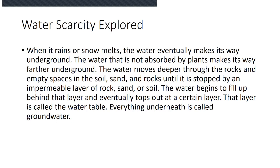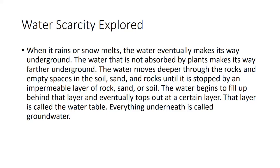So a little bit of background — water scarcity explored. When it rains or snow melts, water eventually makes its way underground. The water that is not absorbed by plants moves deeper through the rocks and empty spaces in the soil, sand, and rocks until it is stopped by an impermeable layer. The water begins to fill up behind that layer and tops out at a certain level — that layer is called the water table. Everything underneath is called groundwater.